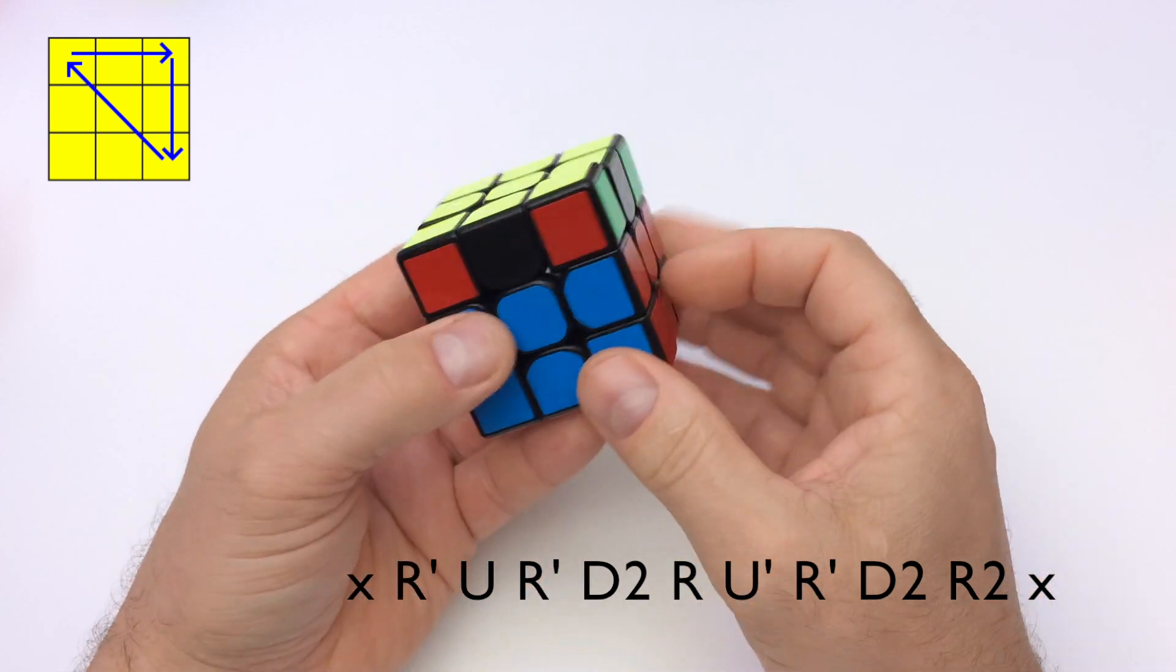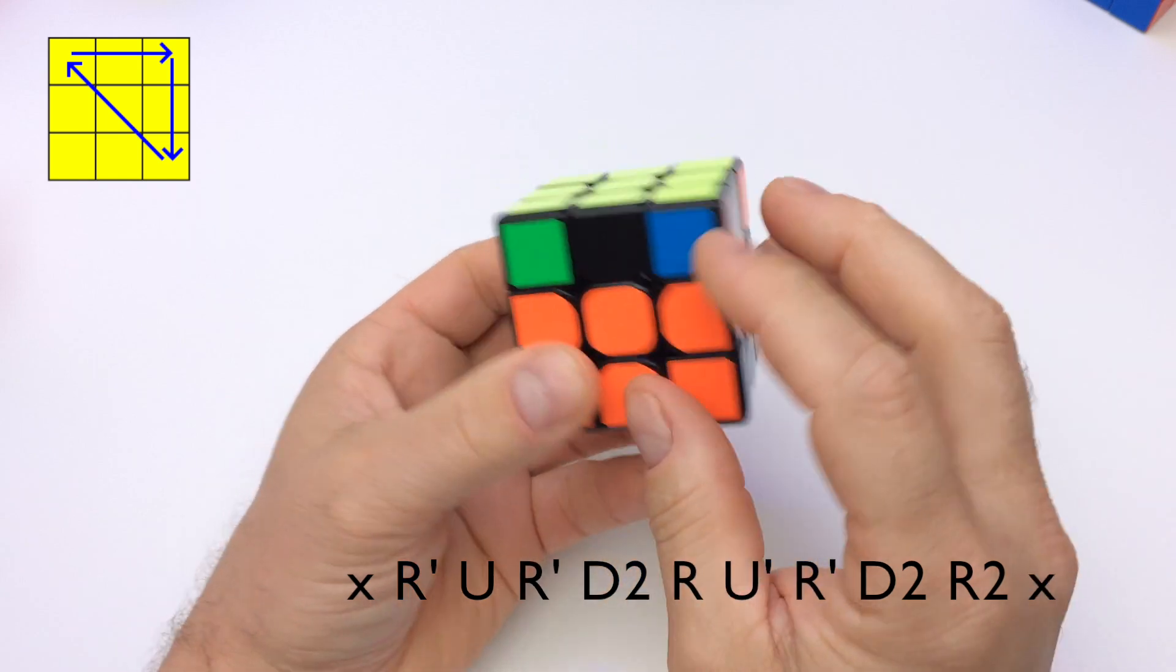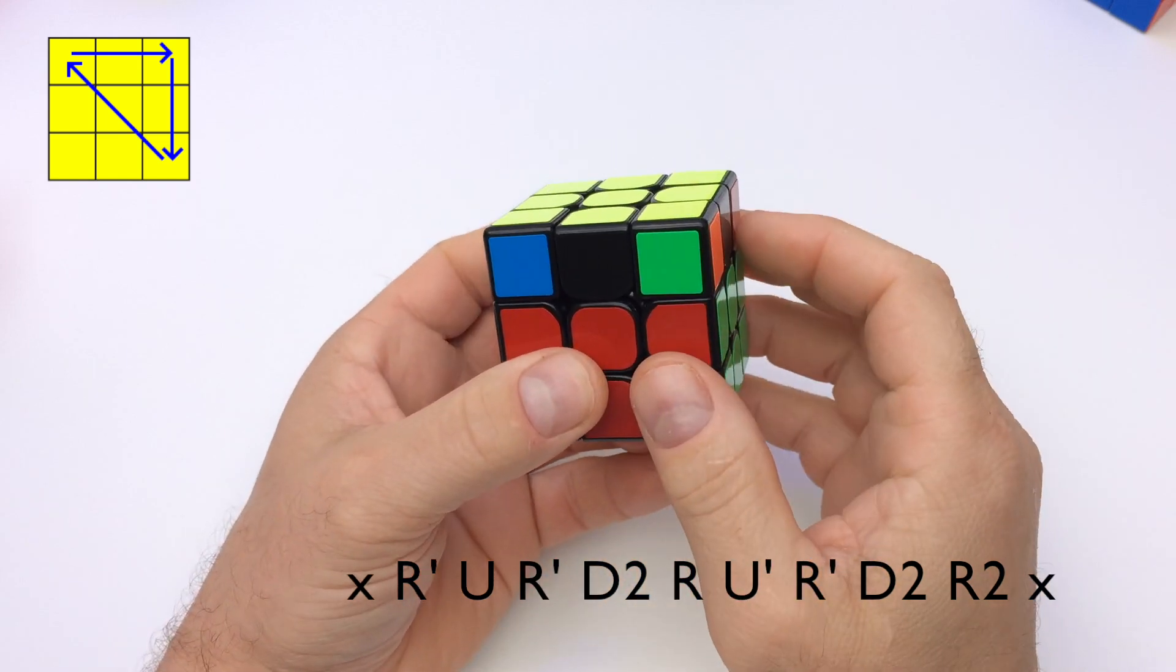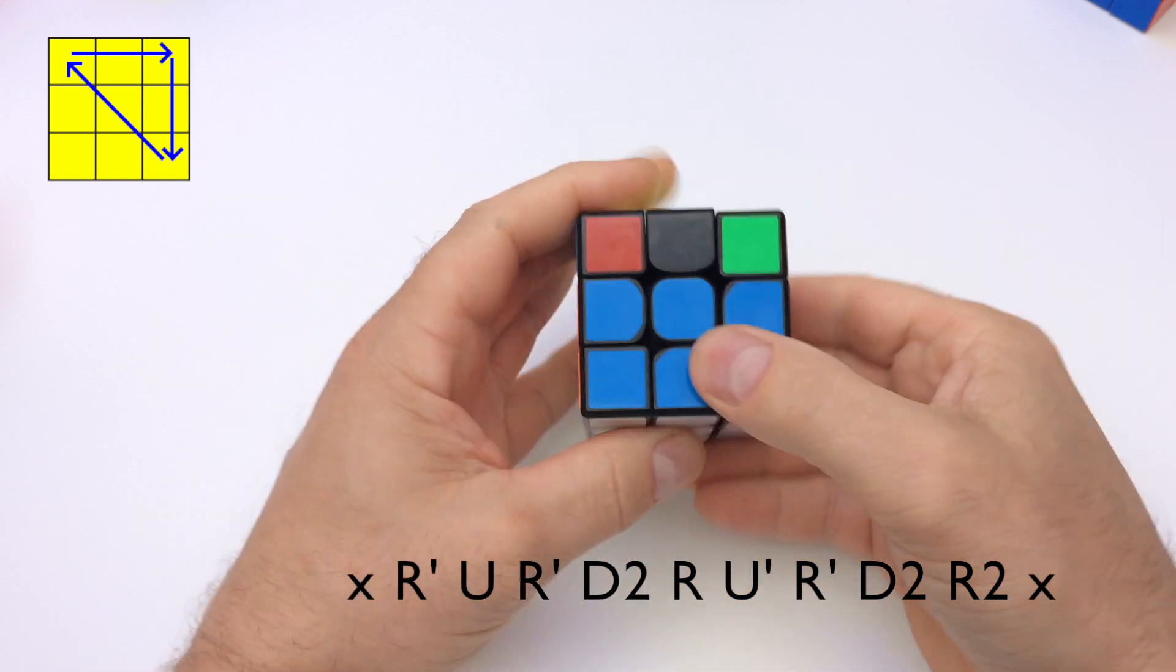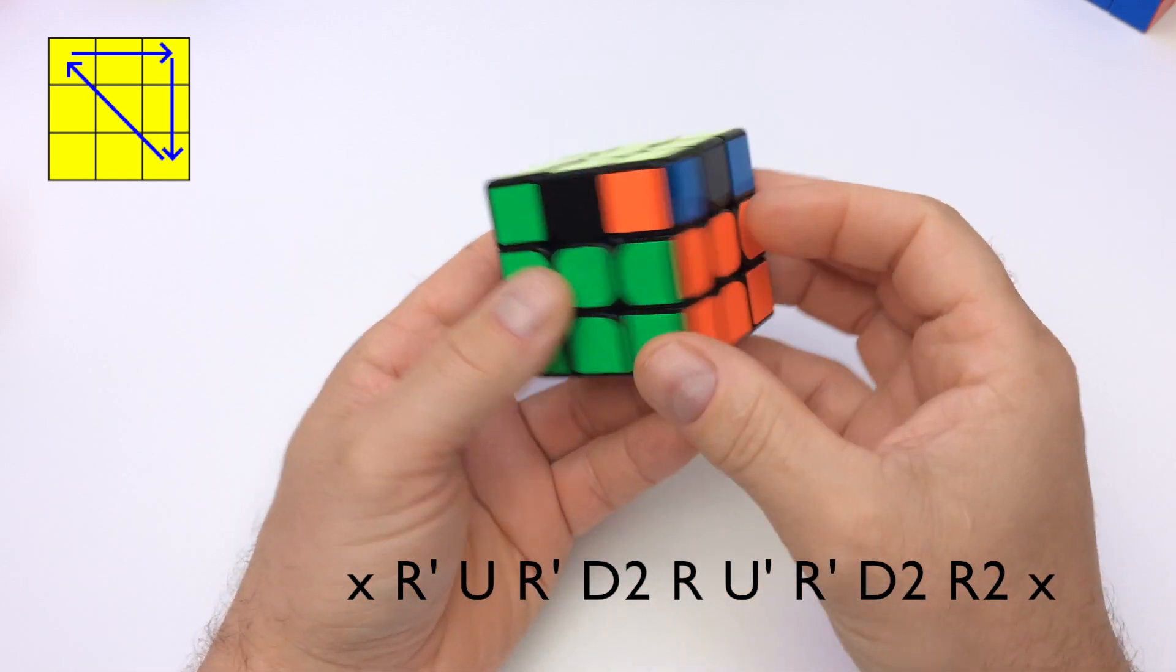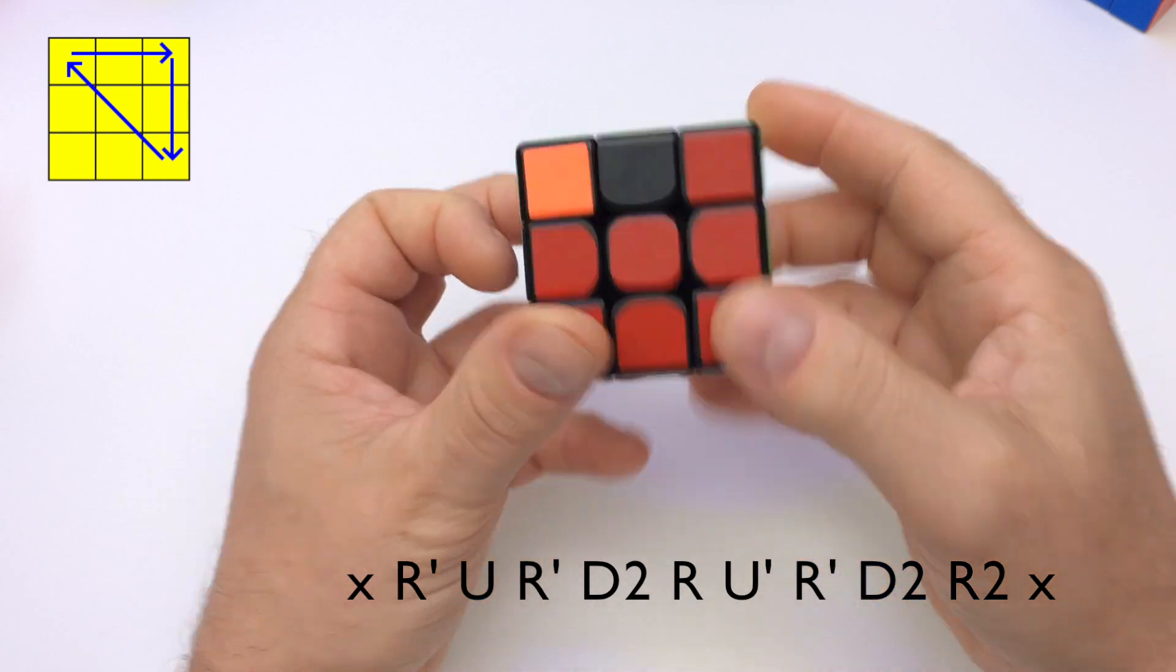At this point, all your corners will be fixed. If no side has two corners the same, just perform the algorithm once, then it will have two corners the same. Find them, place them to the back and do it again.